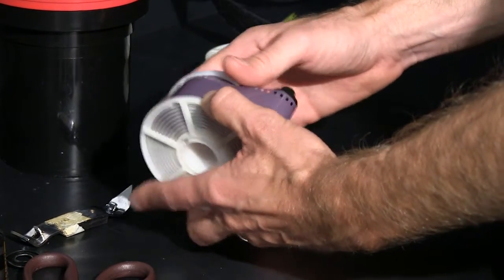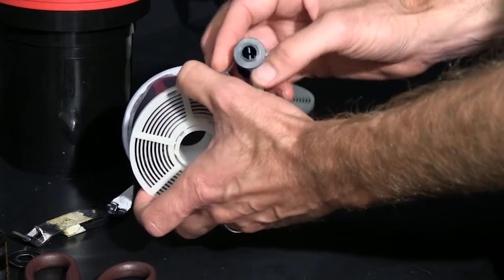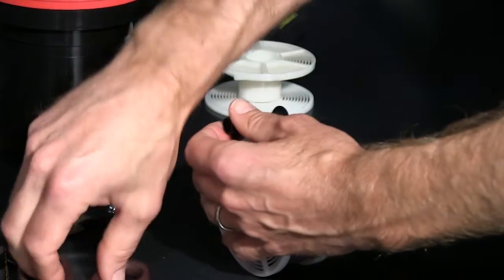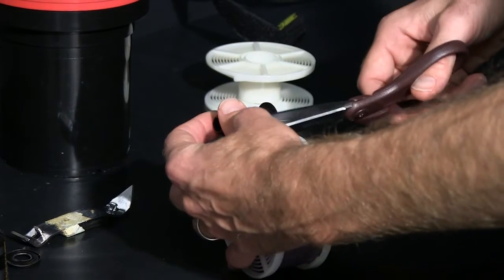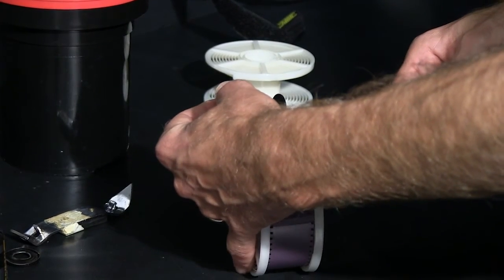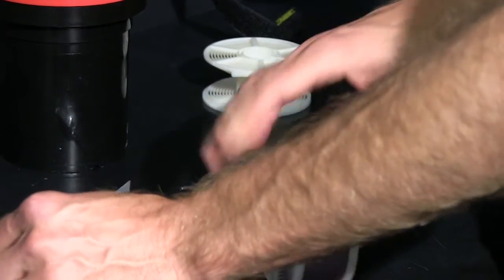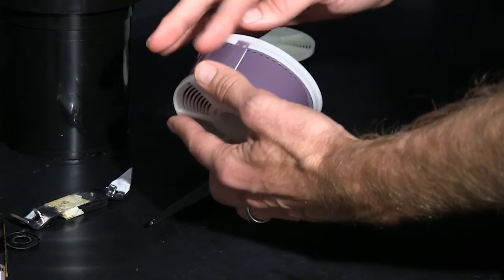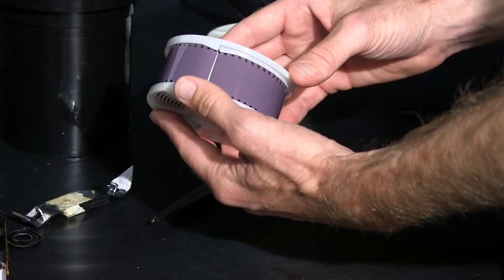You get to the very end here and we're going to have to cut off the plastic spool. Again, we have a couple inches here before our picture starts. Just cut that off there and set that aside, and then go ahead and wind a couple more turns there to get the rest of the film onto the reel.